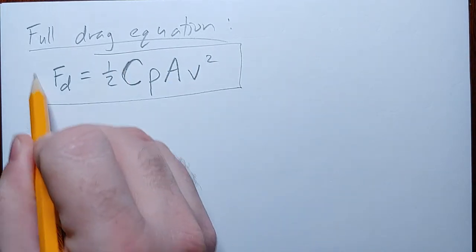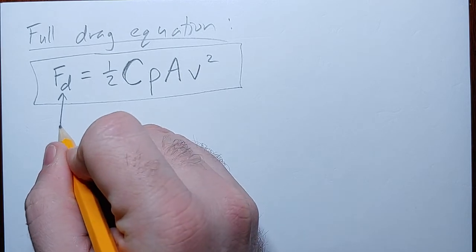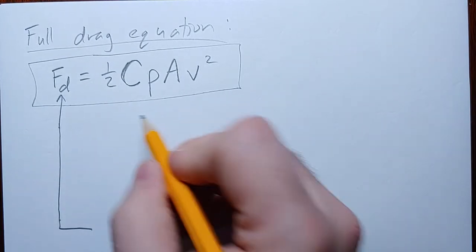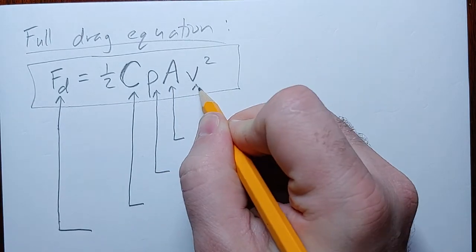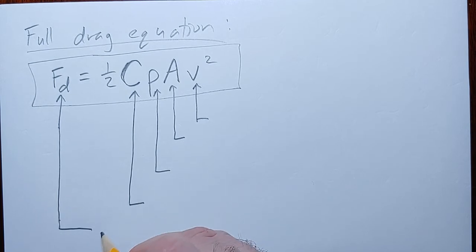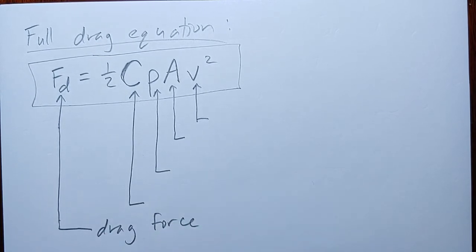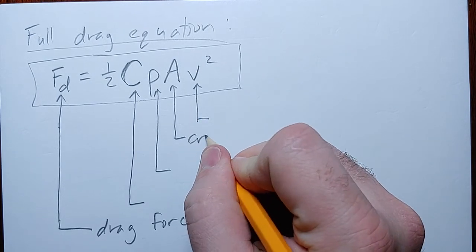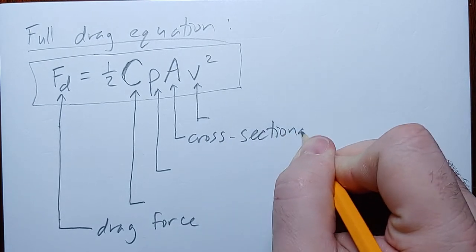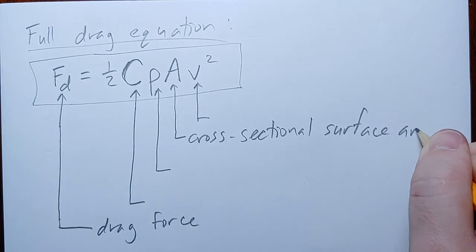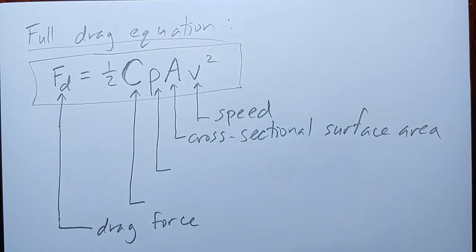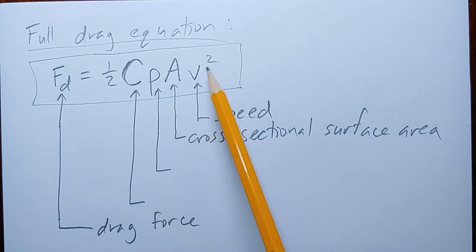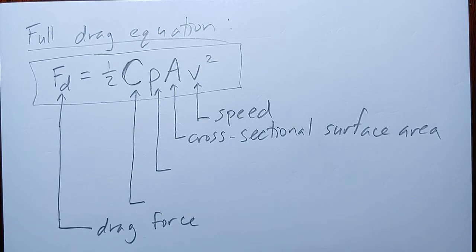A couple of these symbols should look familiar. F_D is the drag force. A is that cross-sectional surface area we were talking about. V is the speed. We can see two of the things we know matter showing up right away. You'll notice that speed is squared, so speed is actually even more significant — the drag force increases with the square of the speed.